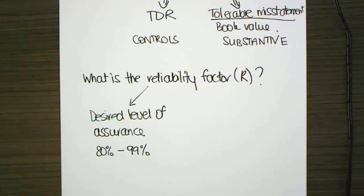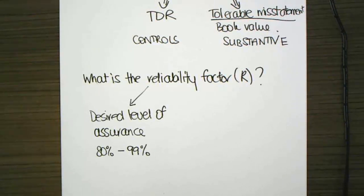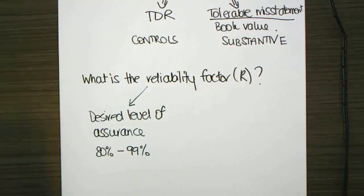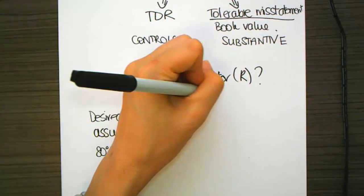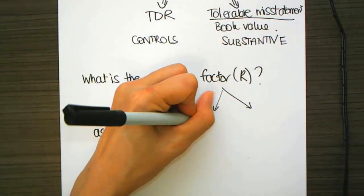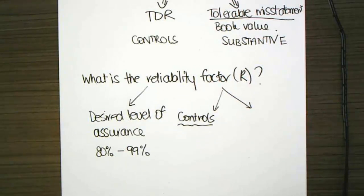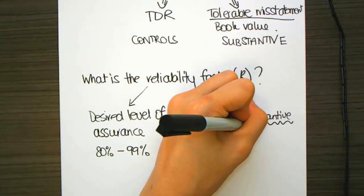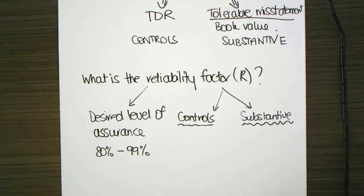So, when we're doing control calculations, let's do it in two ways. So, when we're looking at testing internal controls, and our other option is going to be substantive. So, when we're testing internal controls, to calculate my reliability factor, I'm going to need my desired level of assurance, and then the number of errors I think I'm going to expect to find.